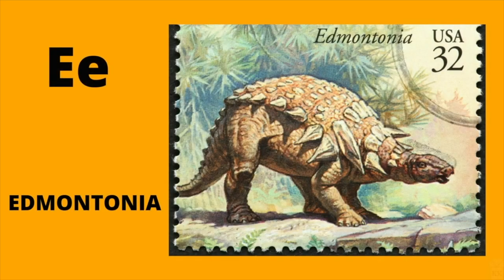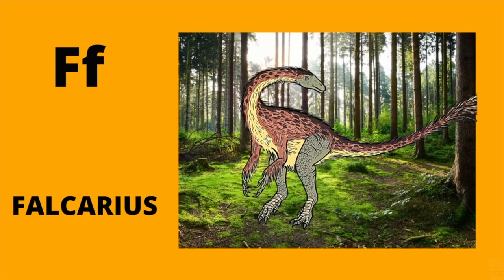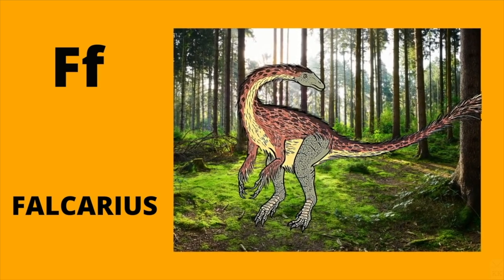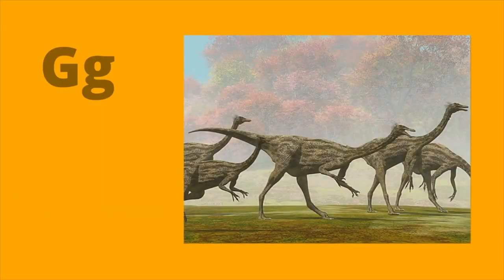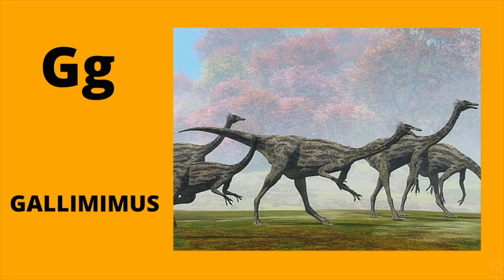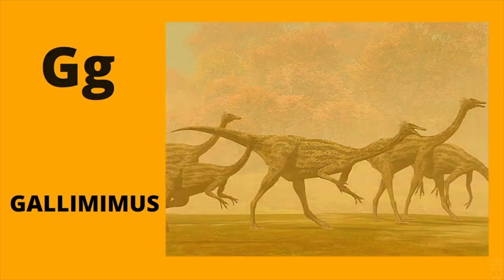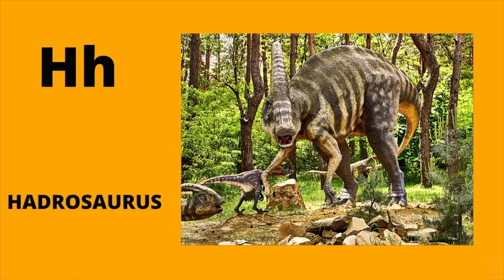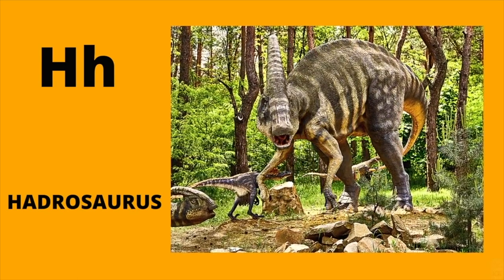E is for Edmontonia. E, Edmontonia. F is for Fulcarius. F, Fulcarius. G is for Gallimimus. G, Gallimimus. H is for Hadrosaurus. H, Hadrosaurus.